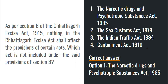As per Section 6 of the Chhattisgarh Excise Act, certain acts are listed upon which the Excise Act does not apply. The question asks which of the options is NOT listed in that section. The Custom Act, Indian Tariff Act, and Cantonment Act are all present in Section 6 — these are areas where the CG Excise Act does not apply. But Narcotic Drugs and Psychotropic Substances is NOT present there, so option 1 is correct. Always read 'not' carefully in MCQ papers.